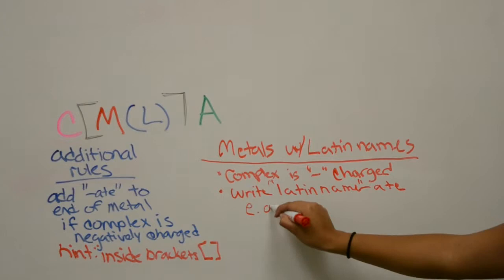An example: iron would be ferrate. Omit Latin names if the complex is positively charged.